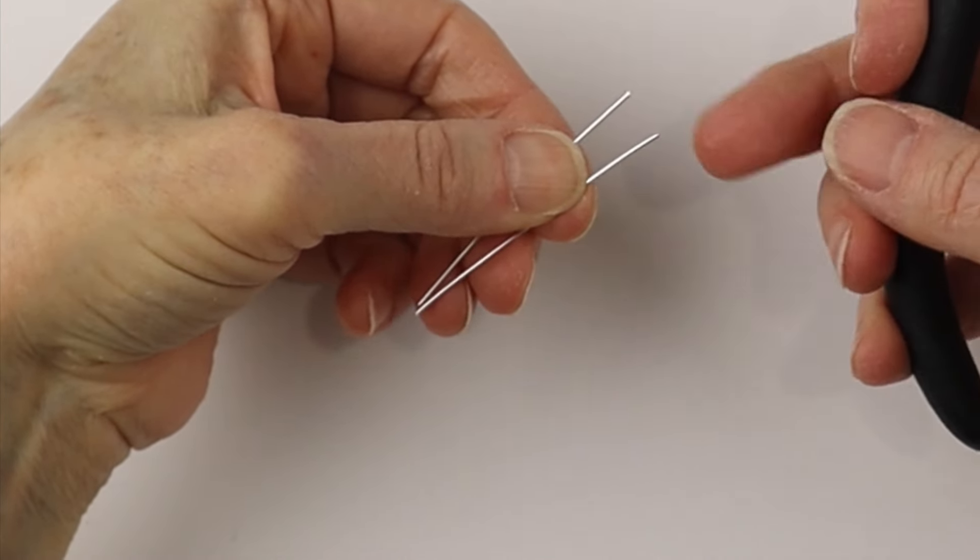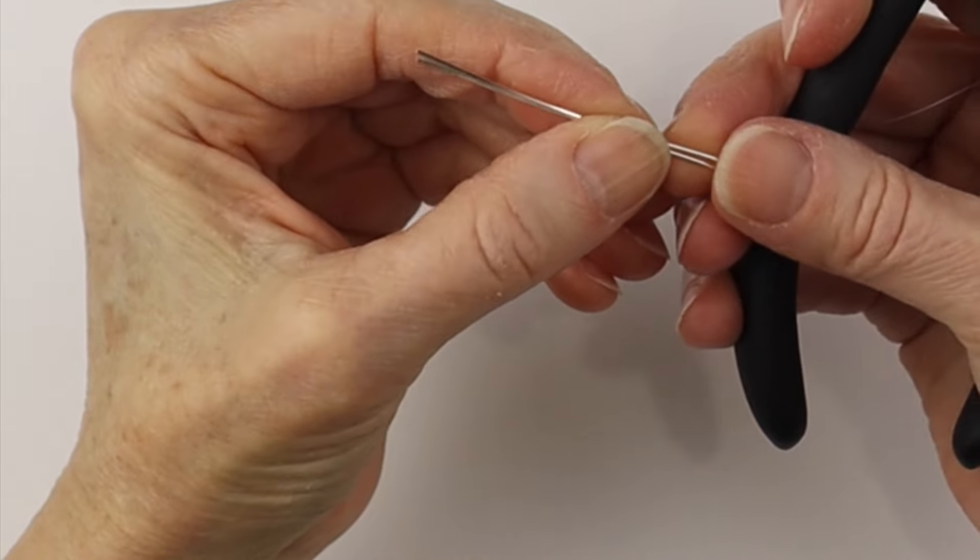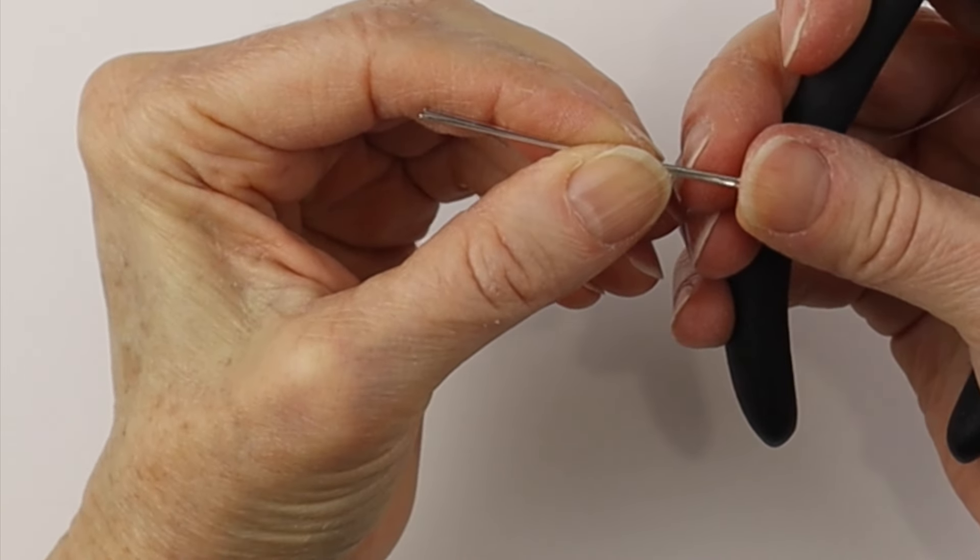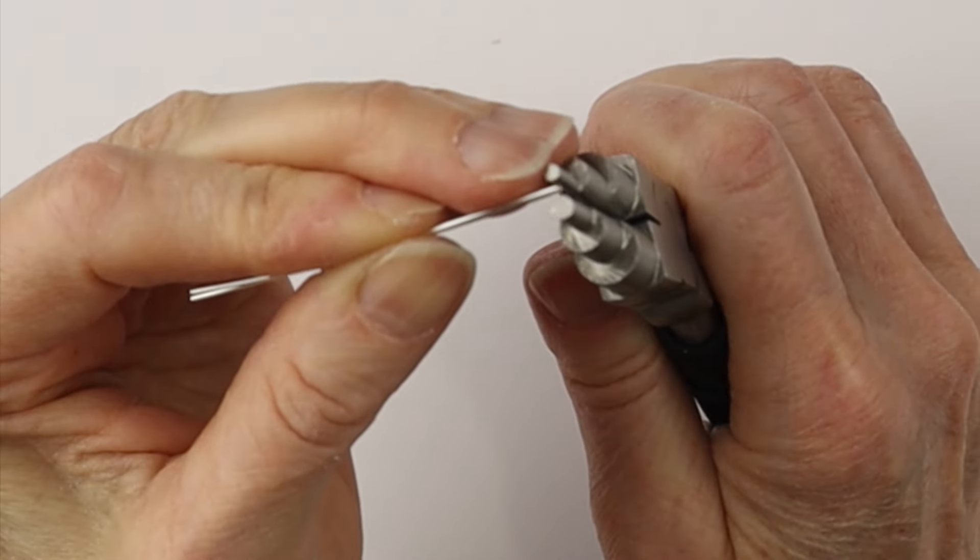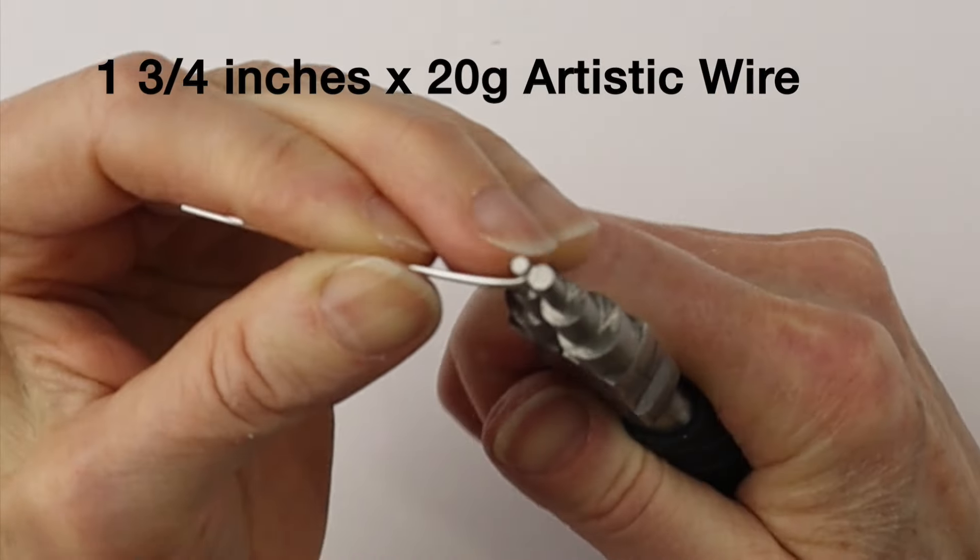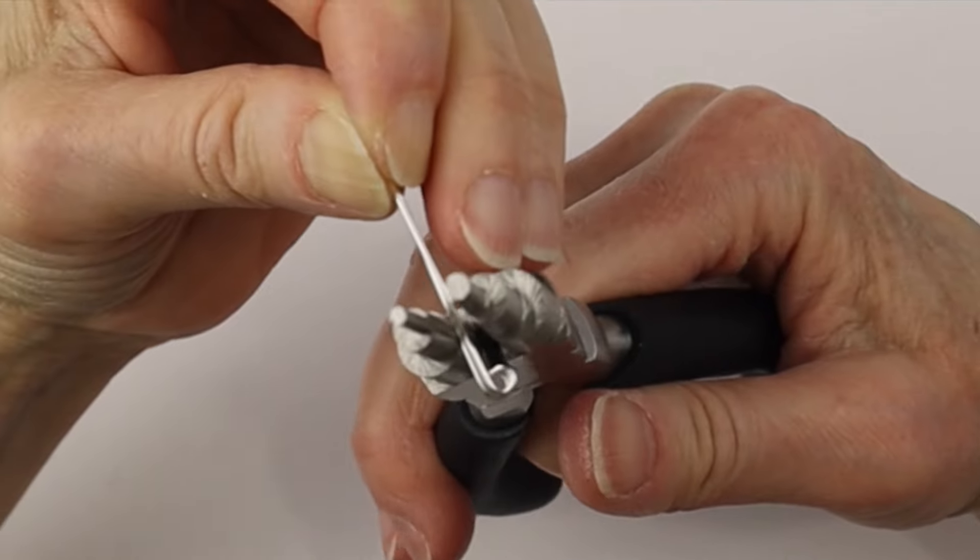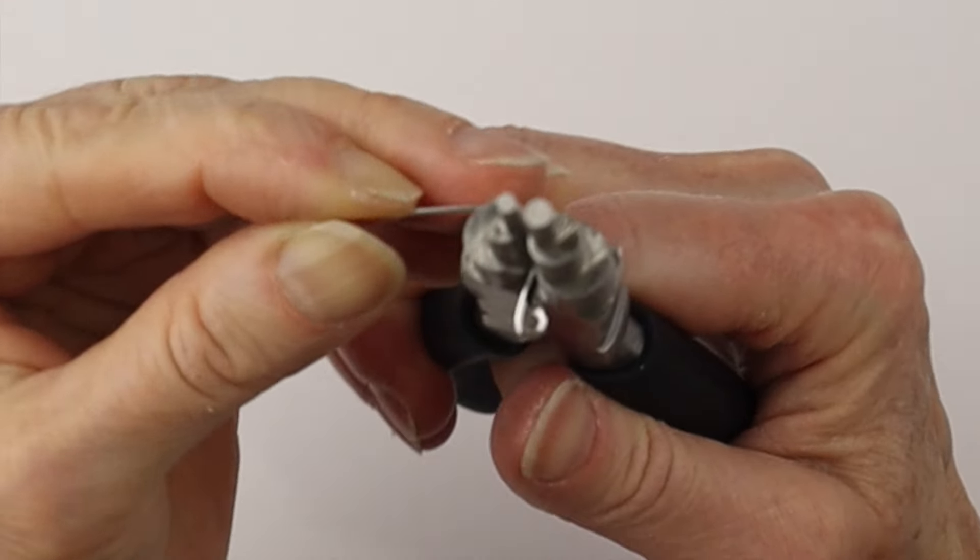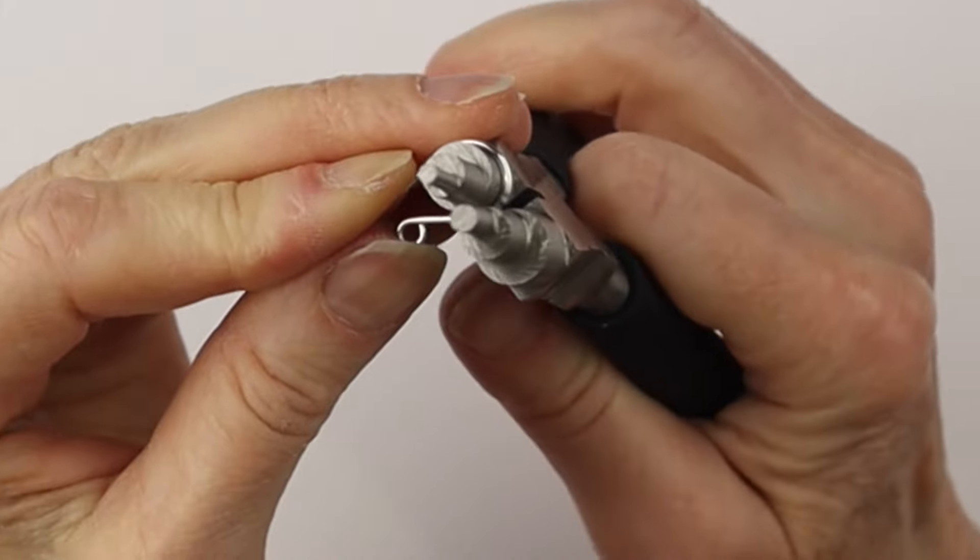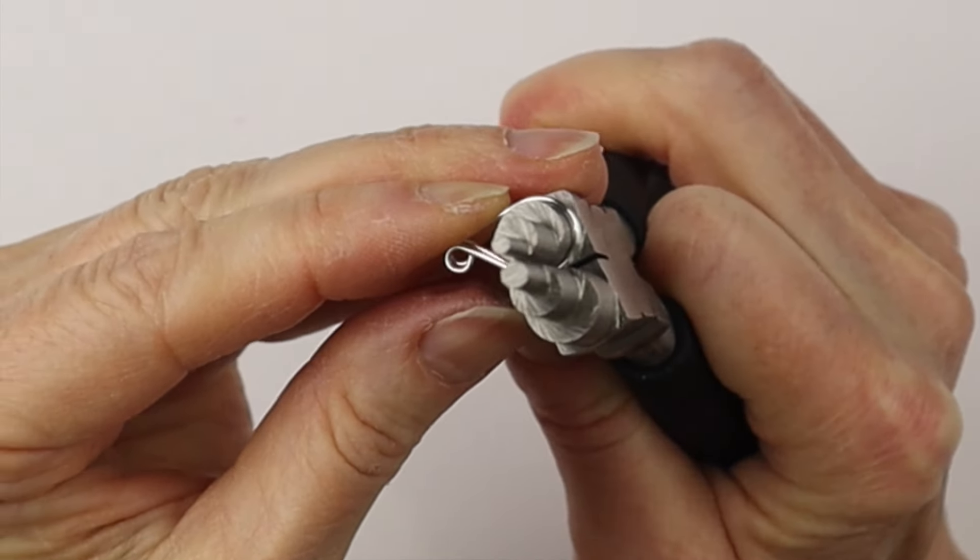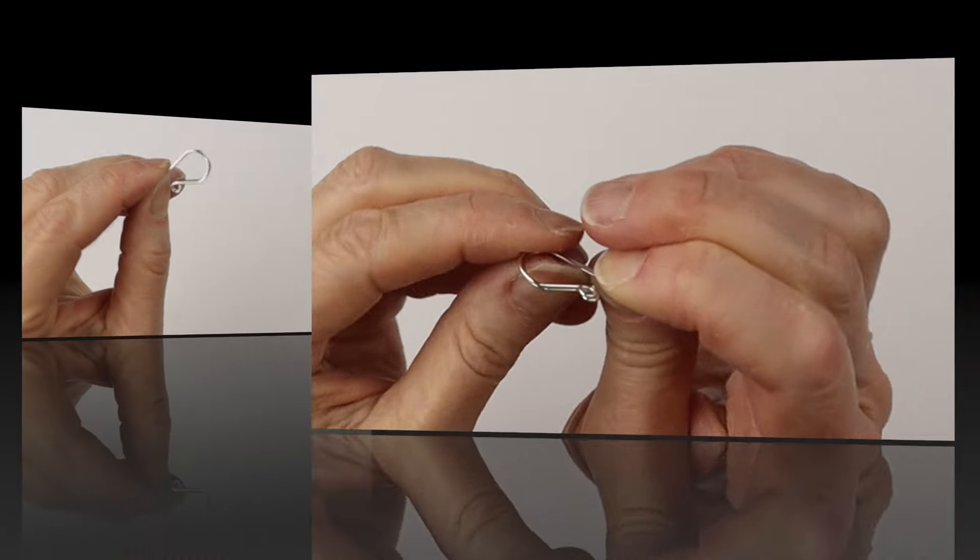Would make a great pendant too, or you can do a set of earrings and a pendant or necklace. Now we have about one and three quarters inches of wire. I would use Argentium silver or any hypoallergenic wire to make the hooks. We're using our bail making pliers from Beadalon to create the hooks. I'm making them both at the same time so they're the same size.